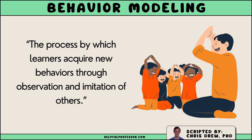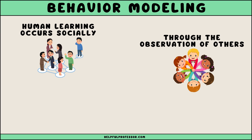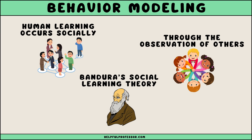Behavior modeling in educational psychology refers to the process by which learners acquire new behaviors through observation and imitation of others. This approach is grounded in the belief that much of human learning occurs socially through the observation of others within a context, a concept stemming from Albert Bandura's social learning theory.